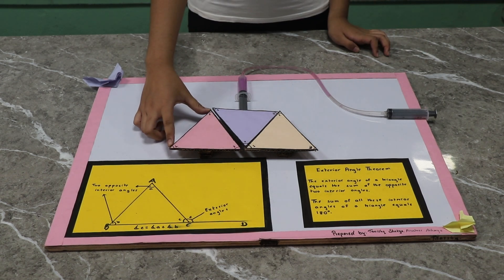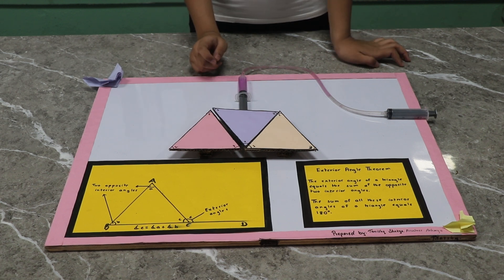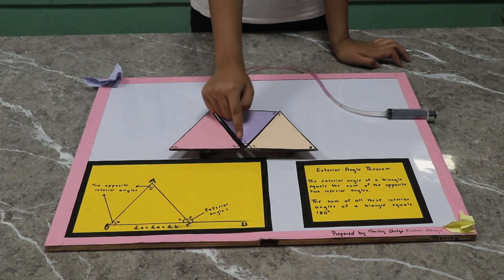When we take the sum of two opposite interior angles which is 1 and 2, it is always equal to the exterior angles 1 and 2.